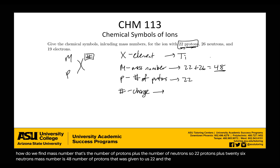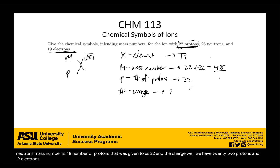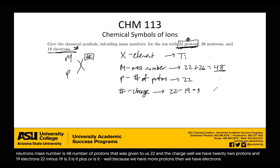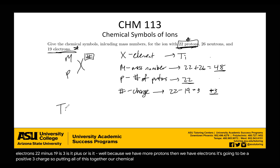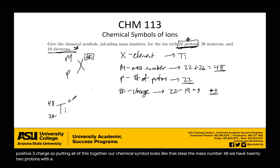For the charge, we have 22 protons and 19 electrons. 22 minus 19 is 3. Because we have more protons than electrons, it's a positive 3 charge. Putting it all together, our chemical symbol is Ti with a mass number of 48, 22 protons, and a plus 3 charge. This is what our chemical symbol looks like.